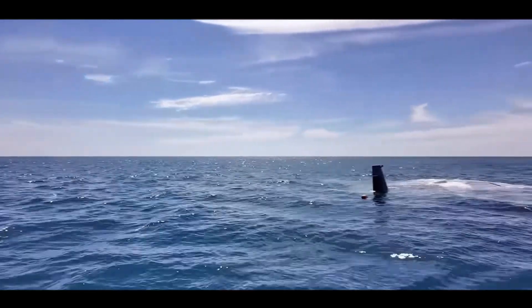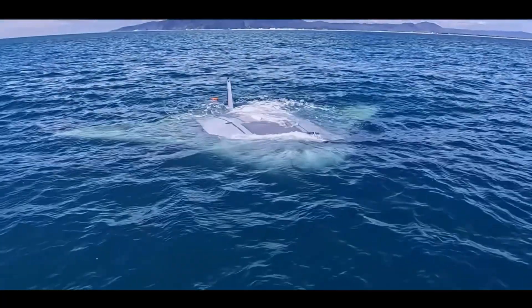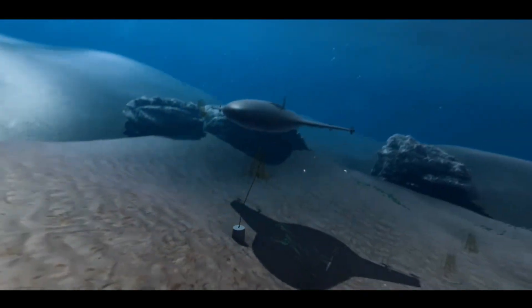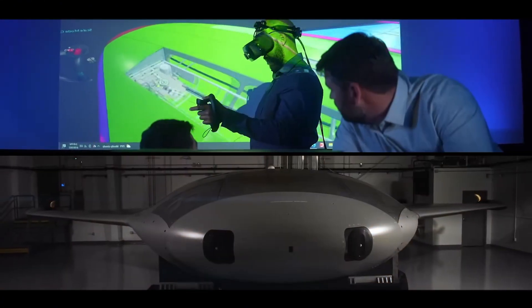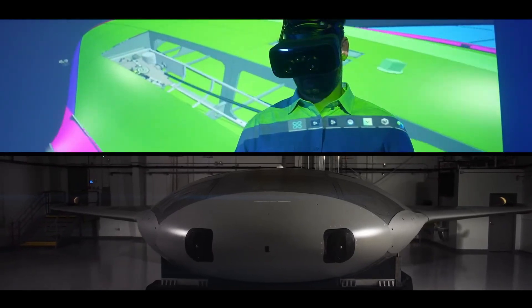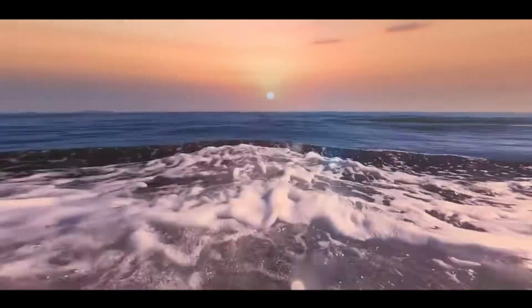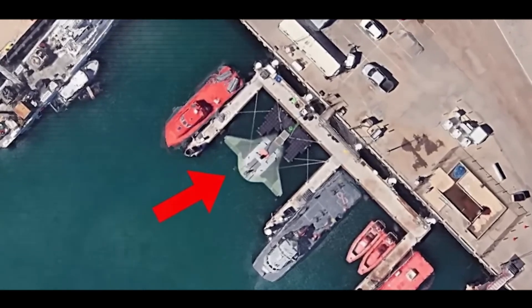In addition to reconnaissance, the manta ray boasts formidable offensive capabilities. Its spacious internal weapons bay enables it to carry a variety of armaments tailored for different mission objectives. These include mines, which can disrupt enemy supply routes; lightweight torpedoes, offering high destructive power with minimal weight for stealth attacks; and bombs, ideal for precision strikes against submarines or coastal infrastructure. This arsenal, combined with the drone's stealth and operational range, makes it a highly effective tool for both defensive and offensive operations.